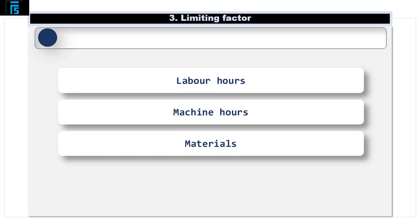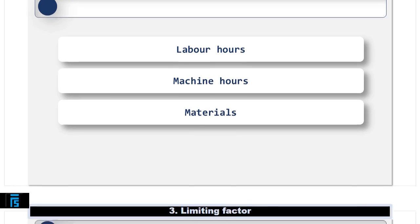It is possible that more than one of these is in short supply, but this cannot be dealt with using limiting factor analysis. Instead, you would need to use linear programming, which is covered on another video. This video will therefore focus on what happens when just one resource is scarce — either labour hours, machine hours or a single material used within the production process.